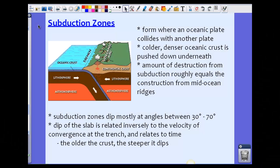Now we're going to talk about subduction zones. This lesson is all about convergent boundaries. In class we talked about divergent boundaries, so this is all about convergent. Subduction zones form where an oceanic plate collides with another plate, either another oceanic plate or possibly a continental plate.